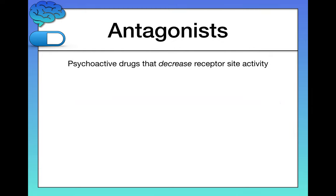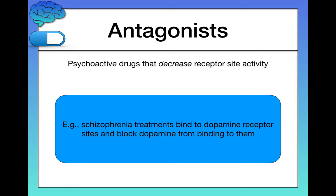Last but not least, a psychoactive drug can also be an antagonist, meaning it decreases receptor site activity. The primary way an antagonist works is by binding to a receptor site to block it — imagine putting hot glue in a lock, letting it dry, and then trying to stick your key in. It's not going to work. This is how some treatments for schizophrenia work, by binding to dopamine receptor sites and blocking dopamine from binding to them, since too much dopamine is associated with schizophrenia.